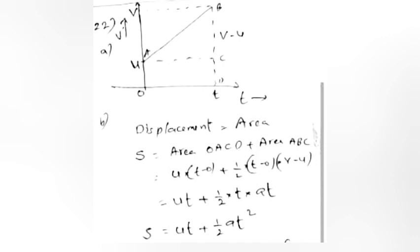Answer: Displacement equals area OACO plus area ABC, which equals u times t plus half t times (v minus u), which equals ut plus half t times at, giving s equals ut plus half at squared.